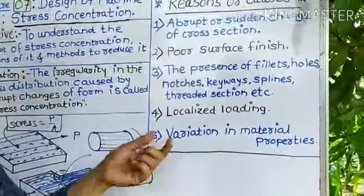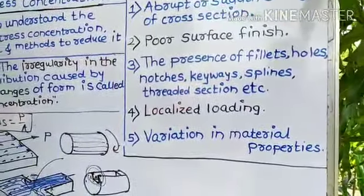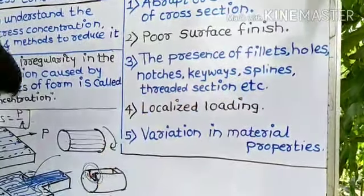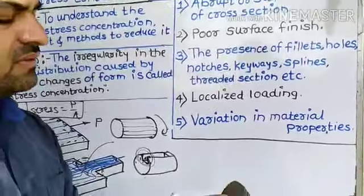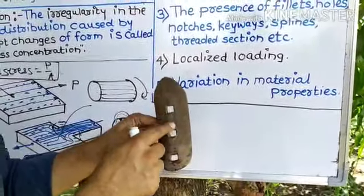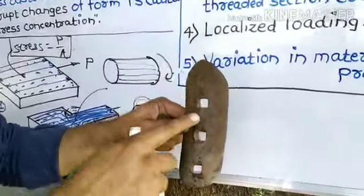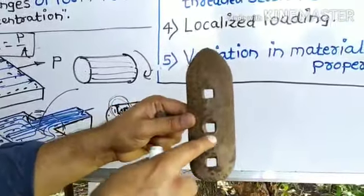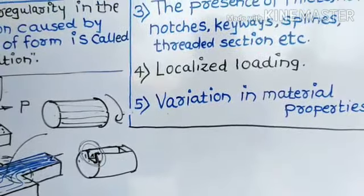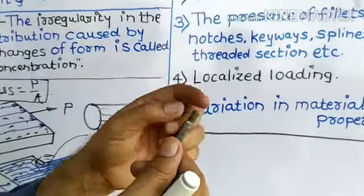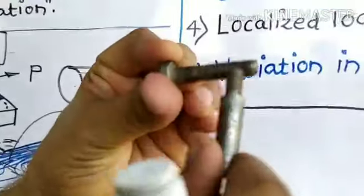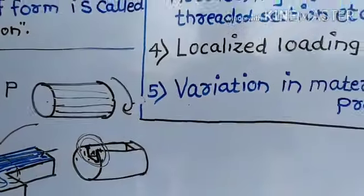The third reason is the presence of fillets, holes, notches, keyways, splines, or threaded sections. For example, consider a plate that was initially plain, but for fixing purposes holes are drilled — square holes are made. This is not a regular portion; holes are present and they may cause stress concentration. Similarly, when threads are provided on a component, this may also cause stress concentration.